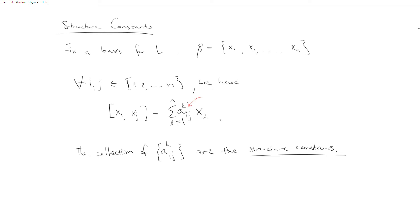And here I'm using L to denote an index, not an exponent. And so of course they're n cubed of these structure constants because I have n choices for i, n choices for j, and n choices for L.